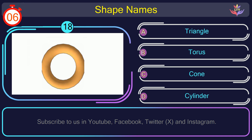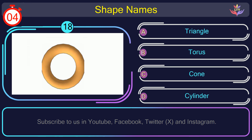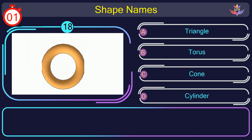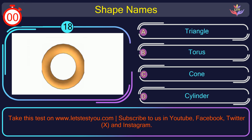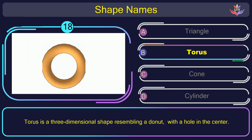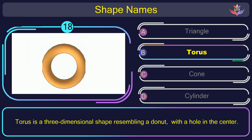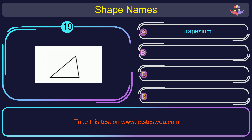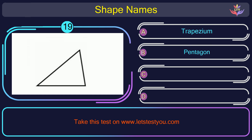Question number 18. Can you name the shape you see in this picture? The correct answer is option B. Torus. Torus is a three-dimensional shape resembling a donut with a hole in the center.